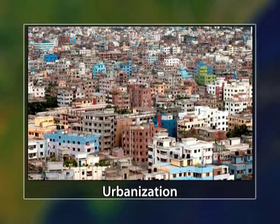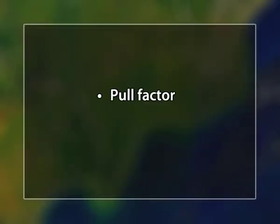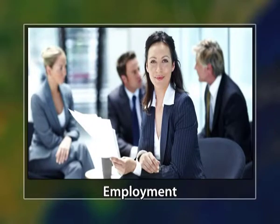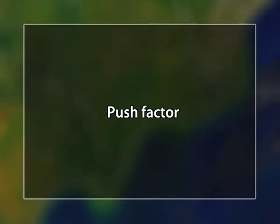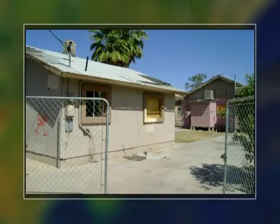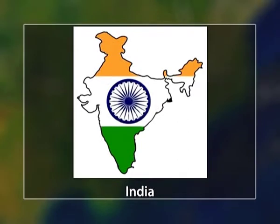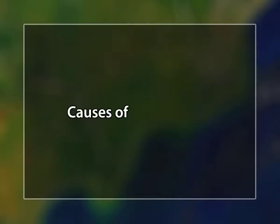Two factors have led to urbanization: the first is the pull factor and another is the push factor. Pull factors are those factors which attract a person, such as availability of employment, more income, better education, and many more. Push factors are those which force a person to migrate from their home due to circumstances. In India and other developing countries, urbanization is mainly due to pull factors.